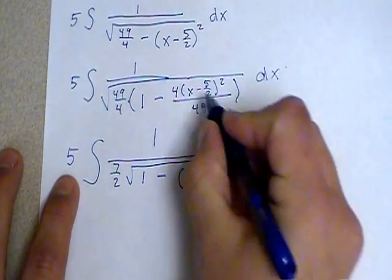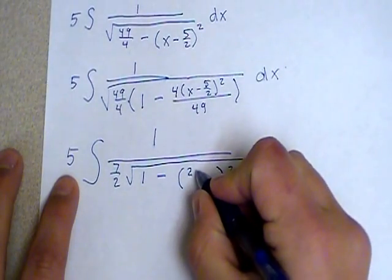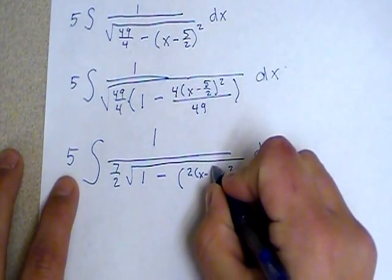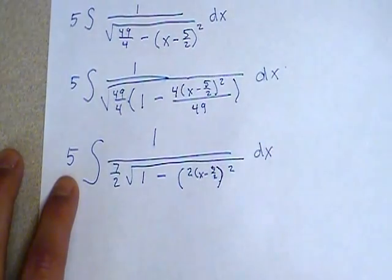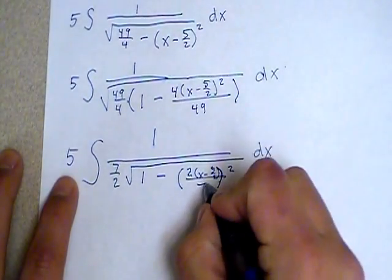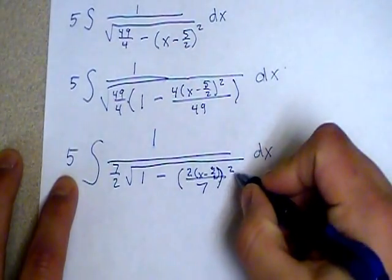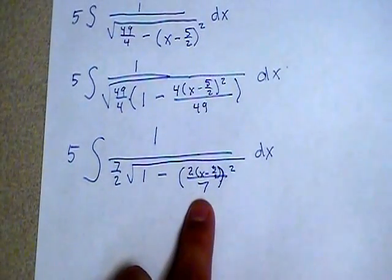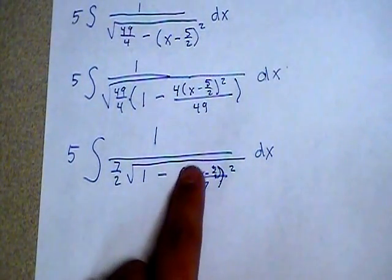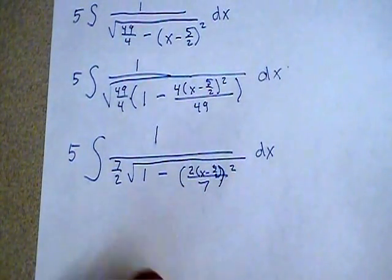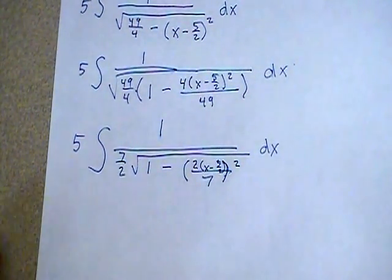So if I rewrote what I had back here as 2 times the quantity x minus 5 halves over 7 all squared, this is linear. So if I let u equal this quantity that's linear, and sorry, excuse me, my negative 5 halves got a little bit sloppy there.